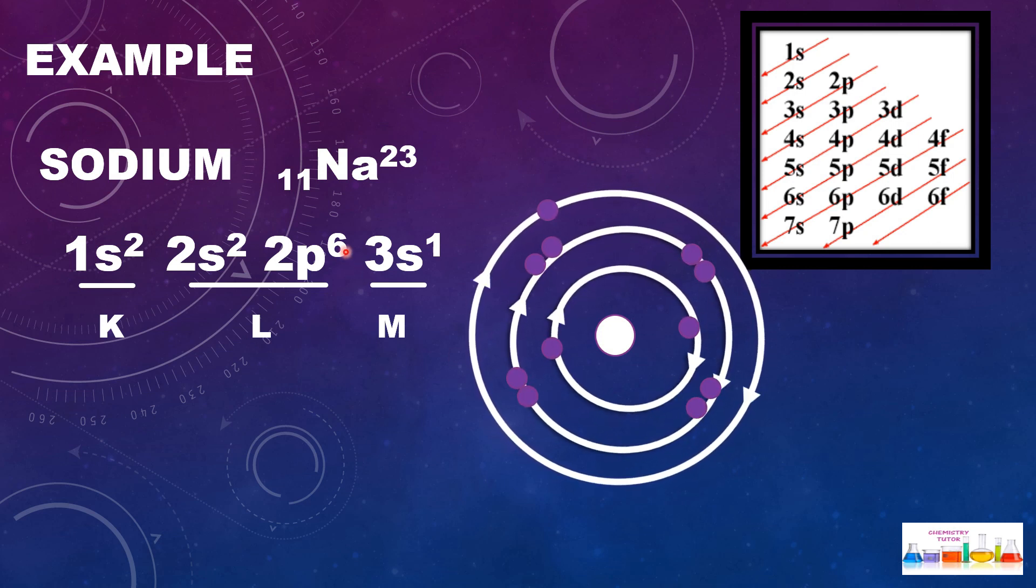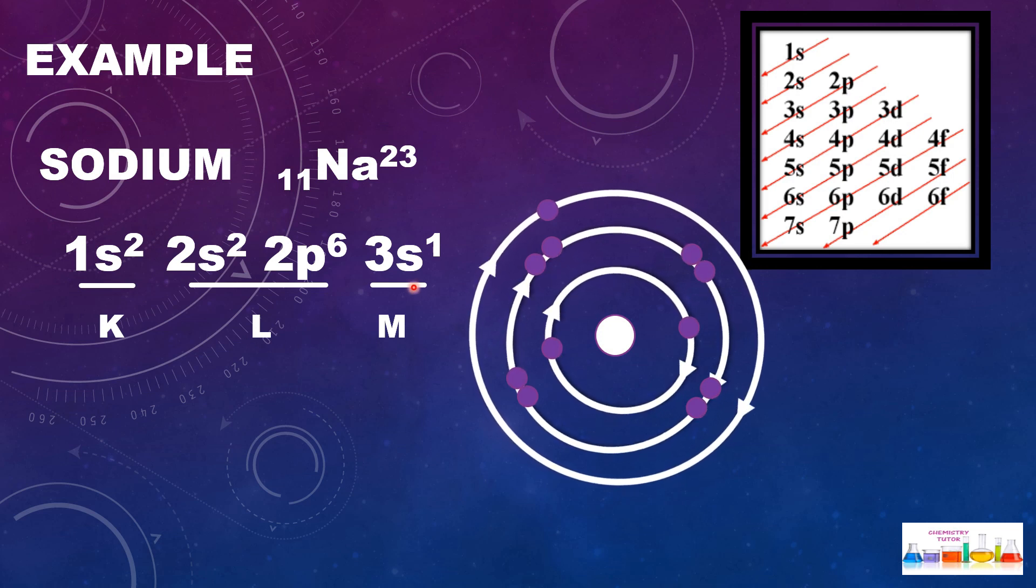If we see this figure, the first shell consists of two electrons. The second shell consists of 6 plus 2, 8 electrons, and here eight electrons are revolving in second shell. The third shell in sodium consists of only one electron. In this way we can write the electronic configuration of sodium.